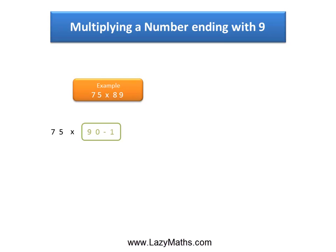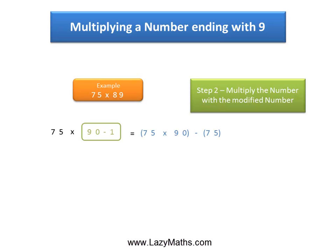75 times 1 equals to 75. So all we need to do is to multiply 75 times 90 and subtract 75 from it. And that's what we are doing right here. 75 times 90 minus 75.